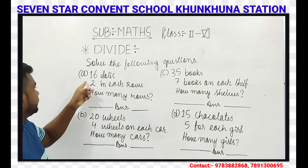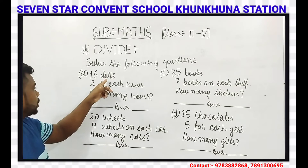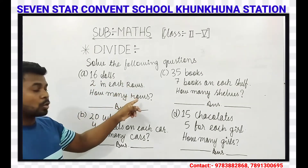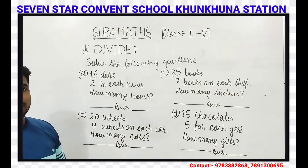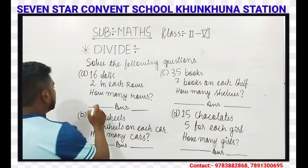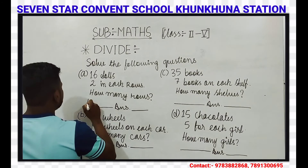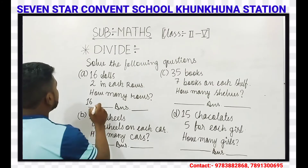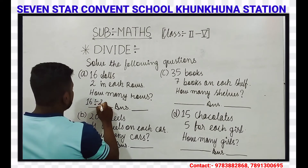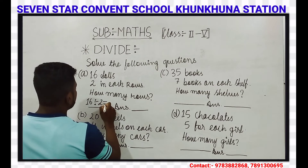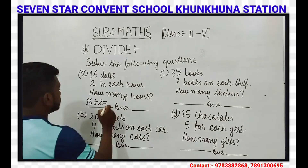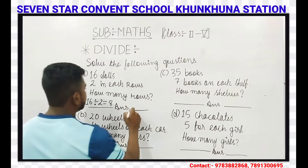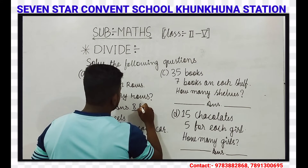In number A we have 16 dollars, 2 in each row. How many rows? So what we have to do here is divide. We have 16, divide it by 2. 16 divided by 2 is equal to 8. So the answer is 8 rows.